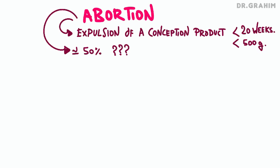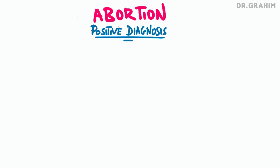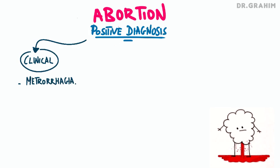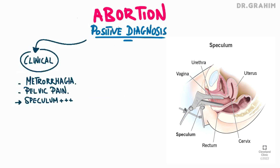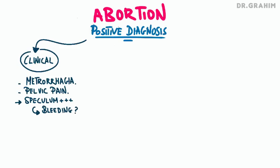In this video, we'll discuss a positive diagnosis and the clinical forms of abortion. When it comes to a positive diagnosis, there are many functional signs that can lead us to suspect abortion. The main symptoms reported by patients are metrorrhagia or genital bleeding and pelvic pain. These pains are varied in intensity. A speculum examination and vaginal touch help us to directly observe the source of bleeding and assess the state of the cervix, confirming that the bleeding originates from inside the uterus and excluding traumatic lesions such as tears or wounds of the cervix or vagina. A closed cervix can be reassuring in some cases, while an open or dilated cervix suggests an ongoing miscarriage.